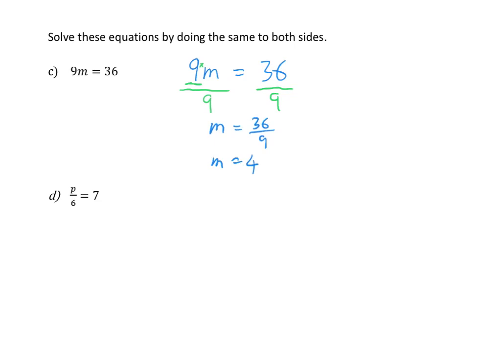In my last example, p divided by 6 is equal to 7. I'll work out the value of p by getting p by itself on the left-hand side. I need to get rid of the divided by 6, so I do the inverse operation — the opposite of dividing by 6 — which is multiplying by 6.